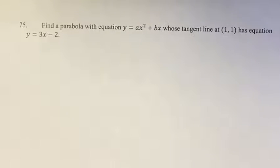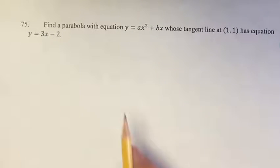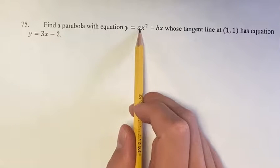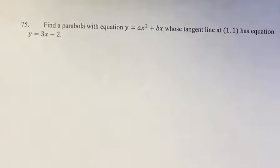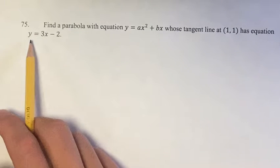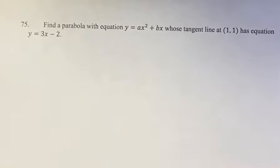Hello and welcome back to another video. In this problem, we're given equation y equals ax squared plus bx. We're told that its tangent line at the point (1,1) has the equation y is equal to 3x minus 2.